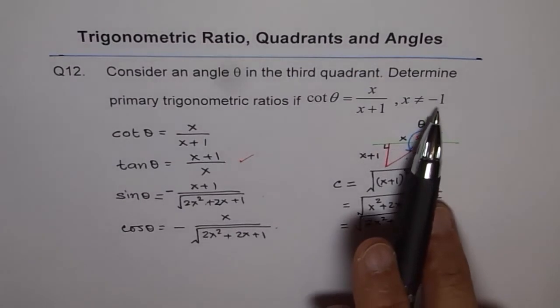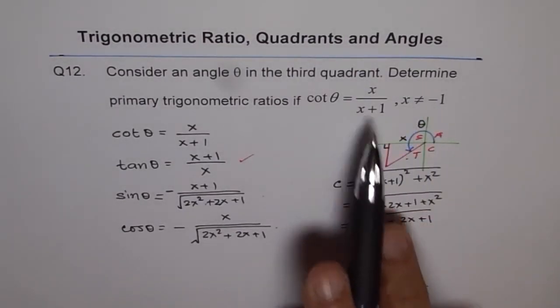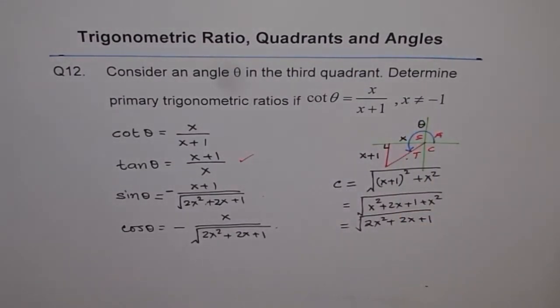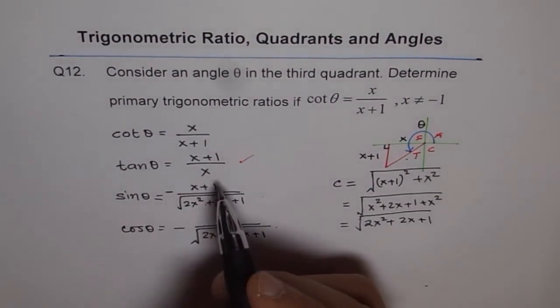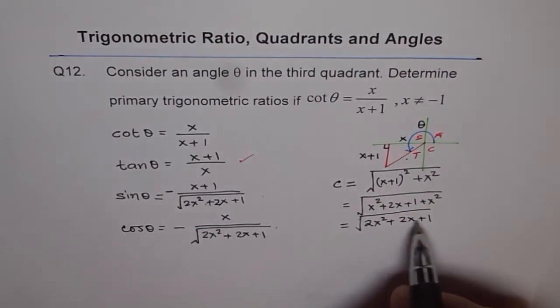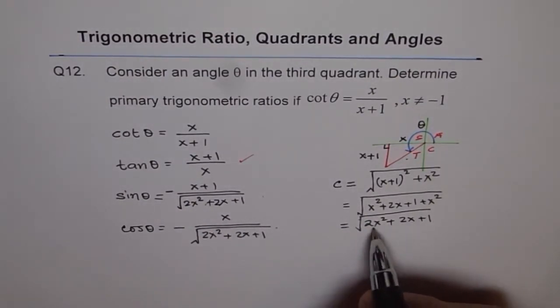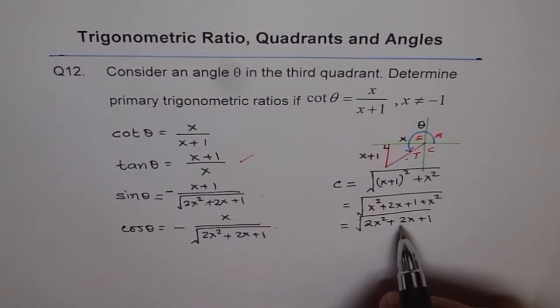Remember, x cannot be minus 1, since that makes this denominator 0. And in this solution, we will now get more restrictions that x cannot be even 0. And that may also give us some restrictions, which you can use quadratic formula and find out. That's not a part of this question, so we are not doing that part at present.